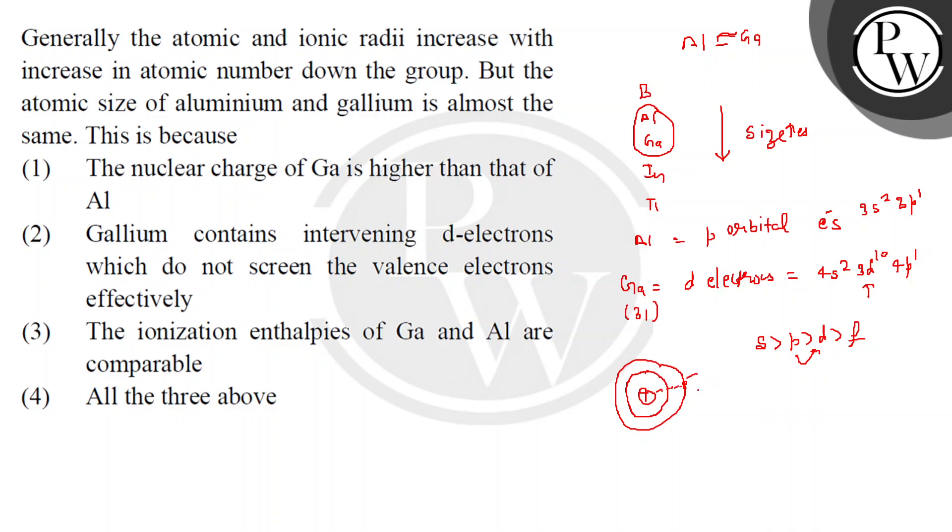So the size of Gallium will be almost similar to Aluminium. Now what happens? The first thing is nuclear charge of Gallium is higher. Z effective, because of shielding power of D electrons, the nuclear charge...